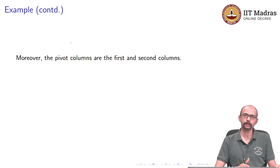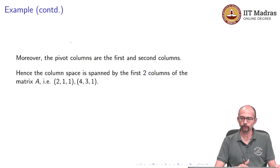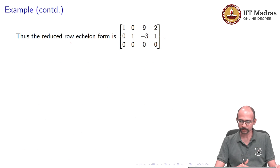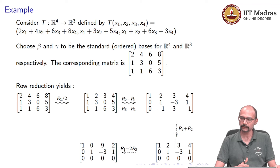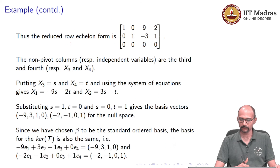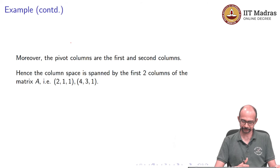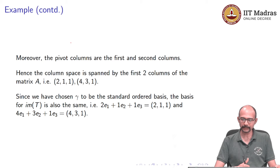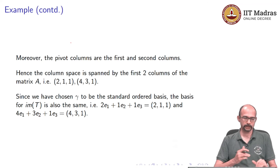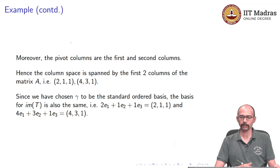To get a basis for the column space, note that the pivot columns are the first and second columns. So from the original matrix, the first two columns form a basis for the column space: the vectors (2, 1, 1) and (4, 3, 1). Since we chose the standard ordered basis for R³, the basis for the image of T is also {(2, 1, 1), (4, 3, 1)}, obtained by the linear combinations 2e1 + e2 + e3 and 4e1 + 3e2 + e3 respectively.